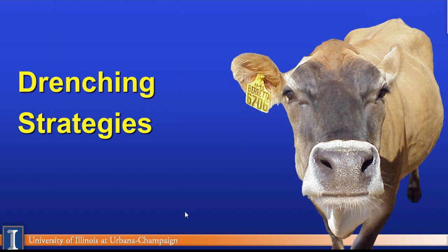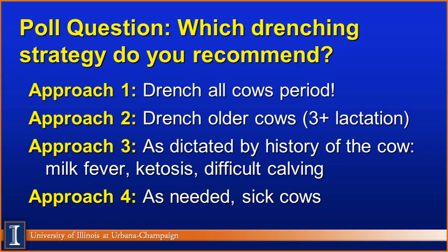Let's finish with drenching. Polling question on drenching strategy: 16% drench all cows, 10% drench older cows only, 40% drench as needed, and 33% use it to treat sick cows. My comment: if you're drenching only once cows are sick, I think you're too late. You need to get this into cows right at calving.